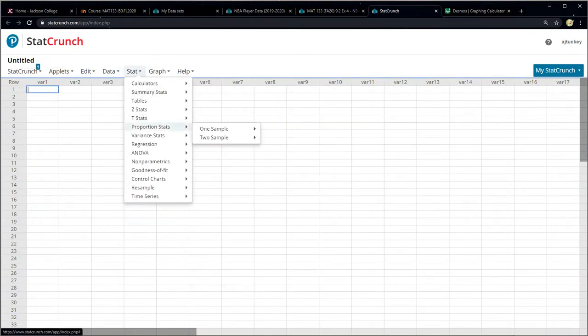So under Stat, under Proportion Stats, see that? I can choose one sample and I have a summary. I don't have the raw data. I don't have all the yes, no, right? Yes, I believe in ghosts, no I don't believe in ghosts. Yes I believe in ghosts, yes I believe in ghosts. I don't have the raw answers from people. I only have a summary of the answers. I know how many were sampled, and I know how many I believe said they believed in ghosts. So I'm going to click with summary.